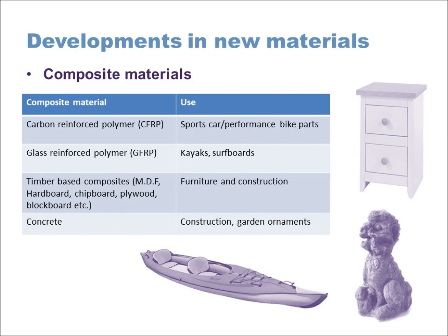Other composites you'll be familiar with are timber-based composites — in many cases manufactured boards. Pretty much all manufactured boards are examples of composites, as they combine wood fibers, veneers, or strands of wood with some sort of resin to hold the parts together. MDF, hardboard, chipboard, plywood, blockboard, and OSB are all examples of timber-based composites and manufactured boards. They're a good one to remember if you're stuck for a composite material in an exam, and are used widely in furniture and construction.